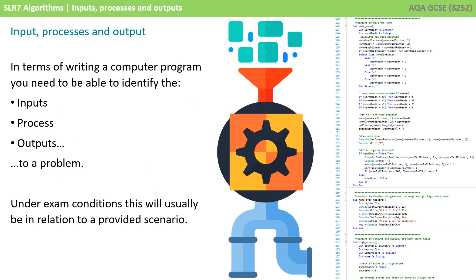Essentially a computer program, or more importantly an algorithm, is the same. And in terms of writing a computer program, you need to also be able to identify its inputs, processes and outputs.